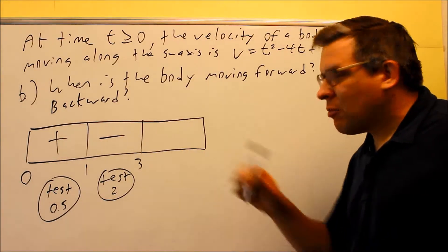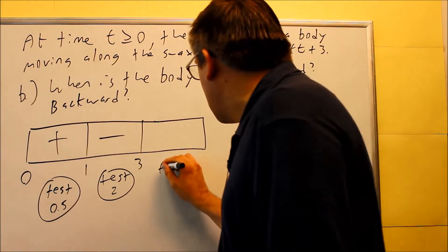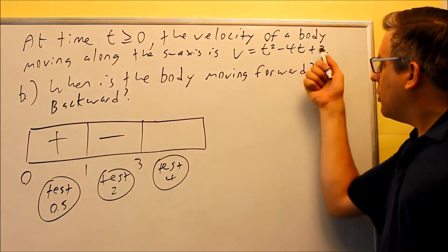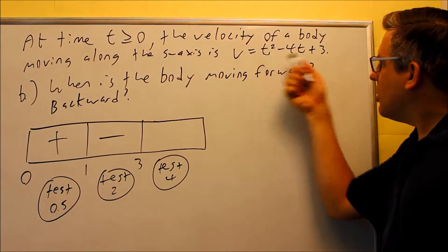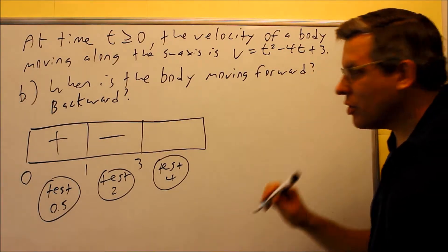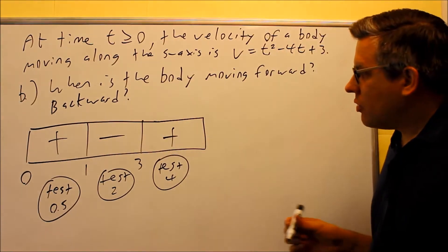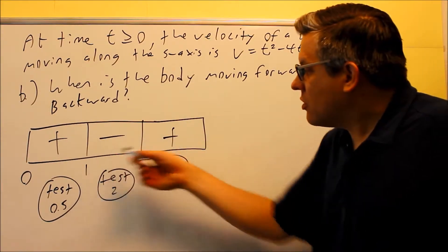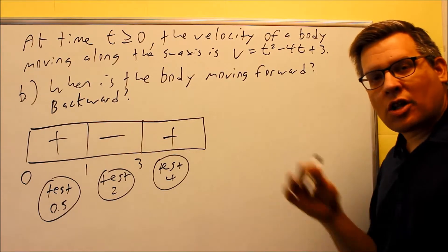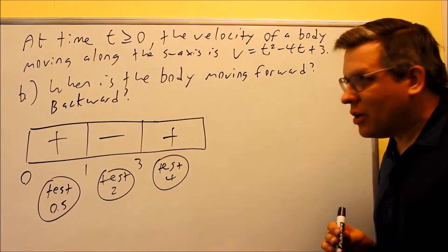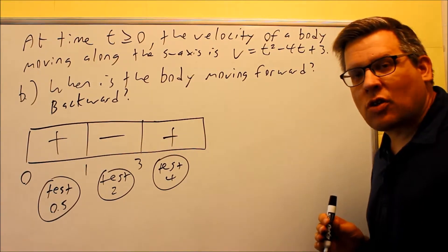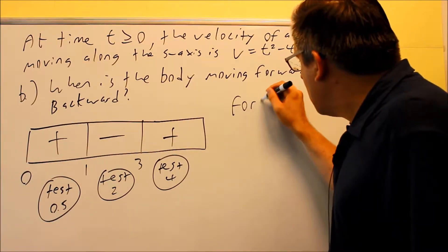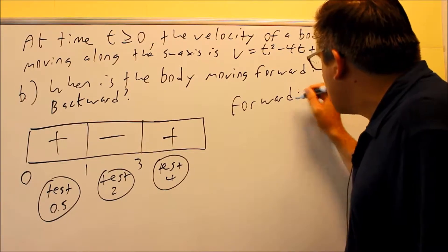Then I'll put in any number greater than 3. I'm going to test 4: 4 squared is 16, minus 16 is 0, plus 3 — positive. So this is my final sign configuration. I can see that it changes direction at 1 and 3 seconds, but the question is only asking when it's moving forward and backward. So I need to put this in interval notation.